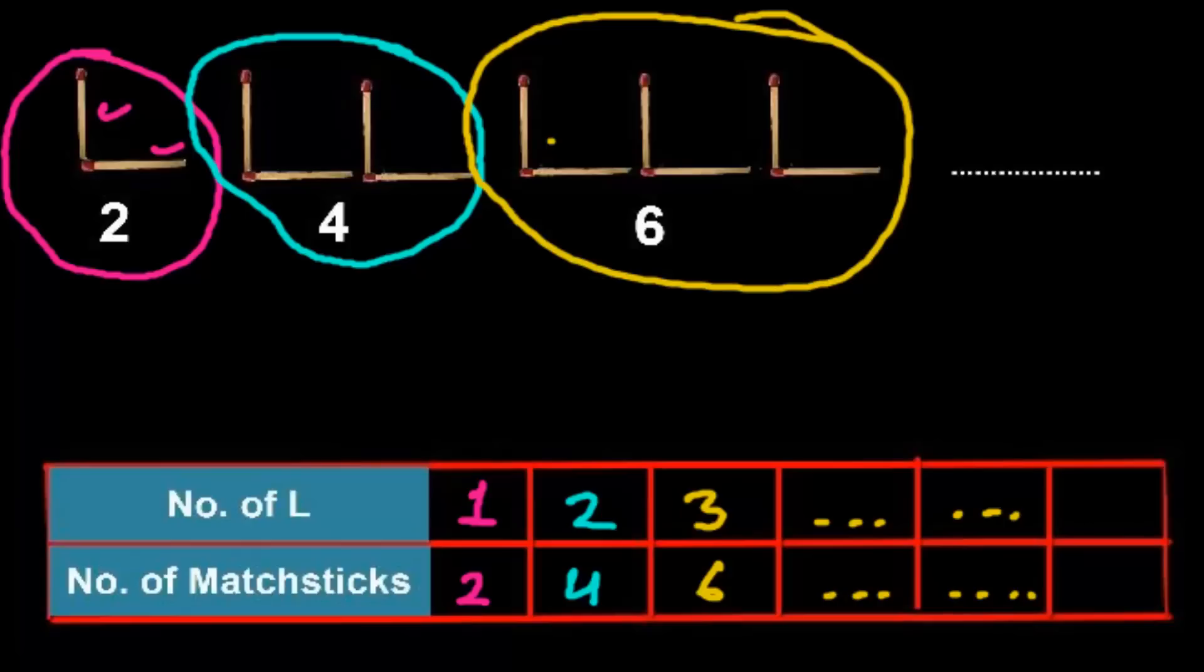Now, what is the relationship? Let's try to make a relationship between the L and number of matchsticks so that we can predict the number of matchsticks required for any number of L's we need in future. Let's say your dad asked, hey buddy, how many matchsticks do we require if you want to make 500 L's? How are you going to find that out?